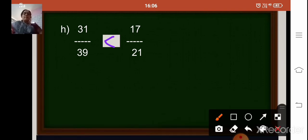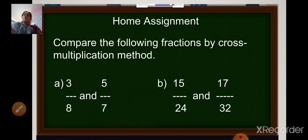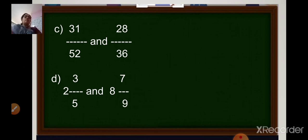Based on this method of cross multiplication, here is your home assignment, which you have to do in your homework part without fail, because you need to practice all these sums. Compare the following fractions by cross multiplication method: 3 upon 8 and 5 upon 7; 15 upon 24 and 17 upon 32; 31 upon 52 and 28 upon 36; and the last one is 2 and 3 upon 5 and 8 and 7 upon 9.